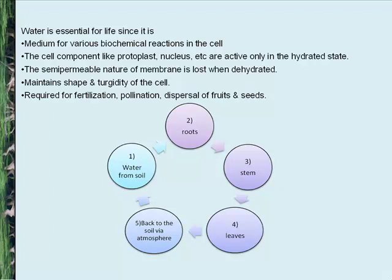From the soil, water is absorbed by the roots. Then by osmosis, it goes to the stem and leaves. The plant utilizes some water and the rest returns to the soil via the atmosphere by the process called transpiration.